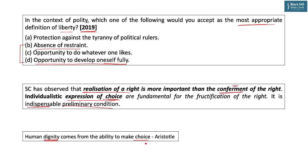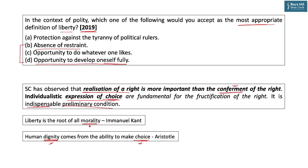Aristotle said human dignity comes from the ability to make choices. The Simon Commission was boycotted because it had no Indian member — the people of the nation had no say in making their own constitution, which was tantamount to taking away their dignity. Similarly, the reason we talk about strategic autonomy in international relations is that a nation must make choices for itself. On the individual level, if one cannot make choices, there is no dignity, and without dignity there is no morality — as Immanuel Kant puts it, liberty and dignity are the root of all morality.